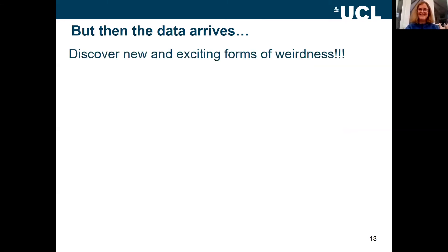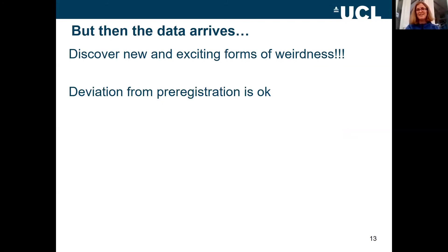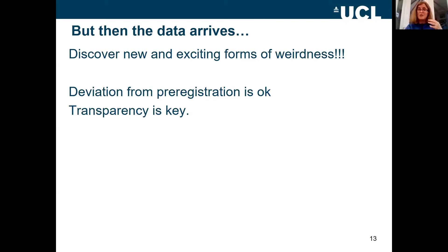Then the data arrives and you discover new and exciting forms of weirdness. Pre-registration isn't intended to restrict you — it is quite common for participants to come up with new and exciting ways of messing up your experiment that you haven't foreseen. It's fine to deviate from your pre-registration if you have a sensible, logical reason for taking somebody out, as long as you're transparent and confident that your readers will think it was a reasonable thing to do.